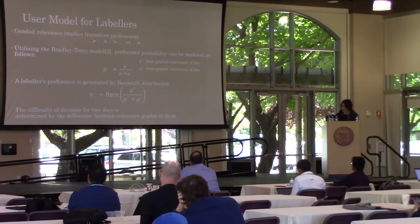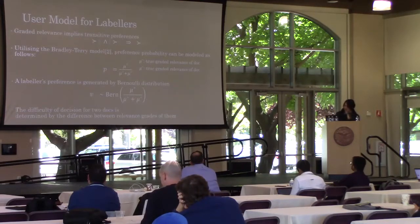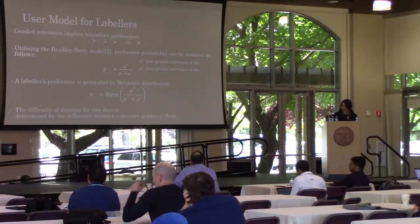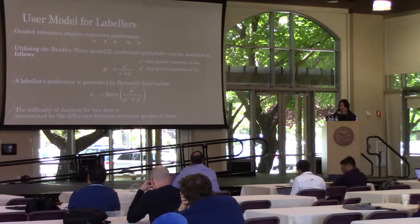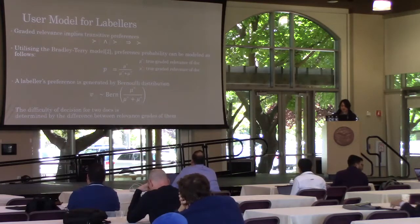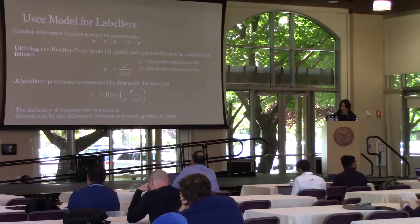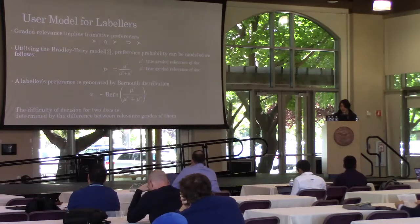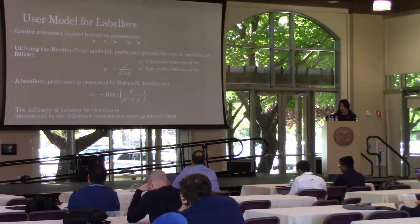So here, we propose a user model for labelers. If we want to handle graded relevance, we can use preference judgment. Comparing graded relevance implies transitive preferences: i preferred over j and j preferred over k, then i preferred over k. This is transitivity.